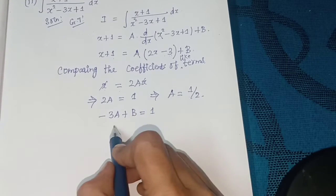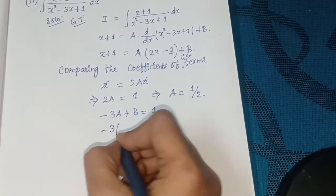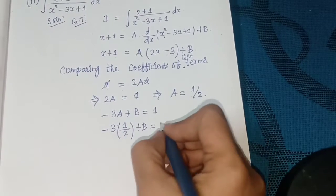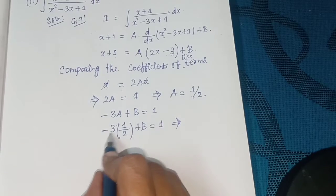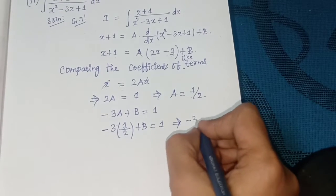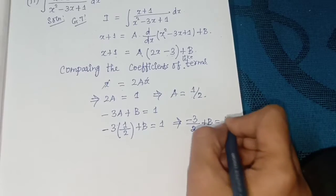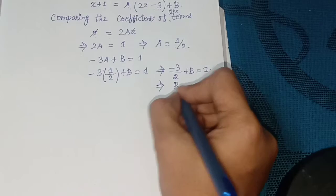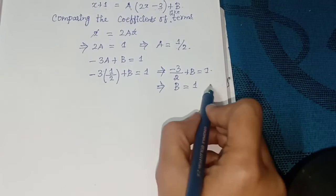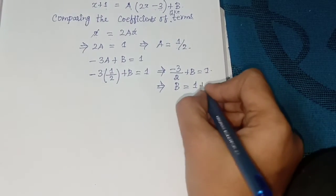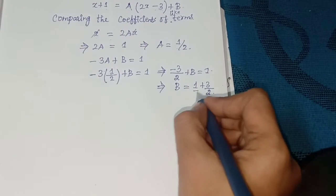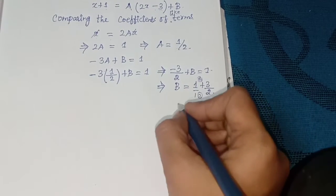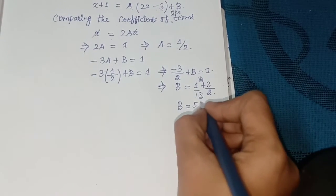Implies minus 3a plus b = 1. Substituting a = 1/2: minus 3 times (1/2) plus b = 1, so minus 3/2 plus b = 1. Taking LCM of 2: b = 1 + 3/2 = 5/2.